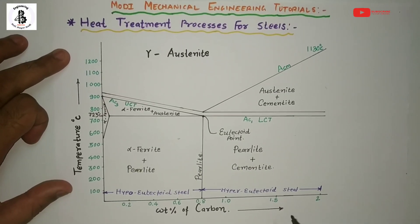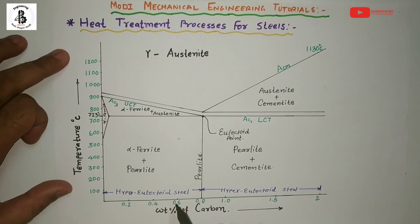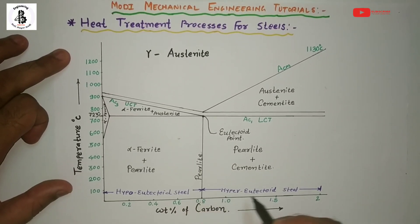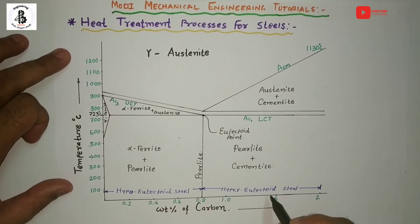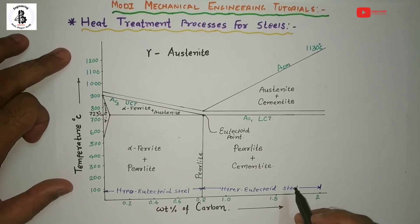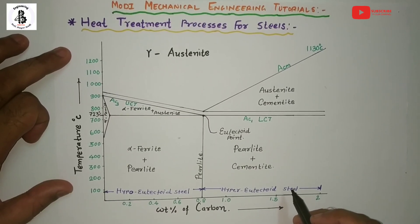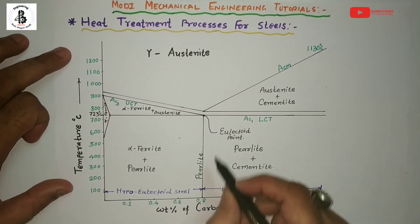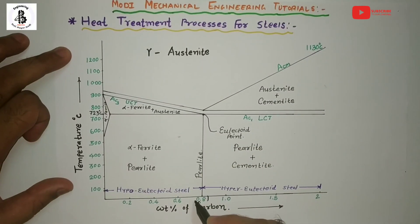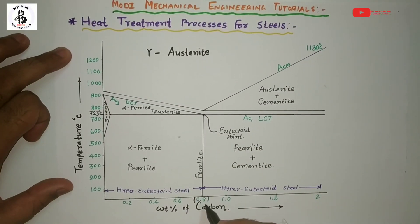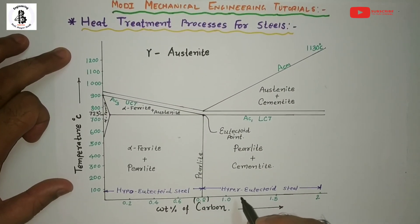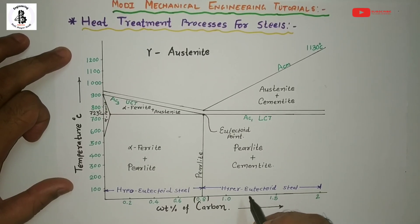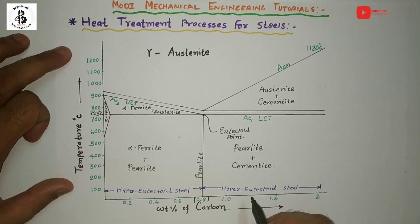So we have hypo-eutectoid steel, eutectoid steel, and hyper-eutectoid steel. If you want to learn in detail about hypo-eutectoid steel, eutectoid steel (0.8% carbon steel), or hyper-eutectoid steel, you will find a link in the description box.